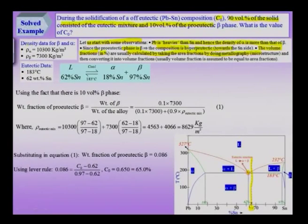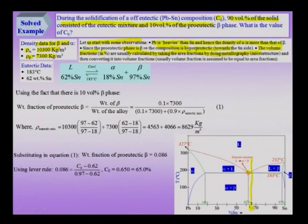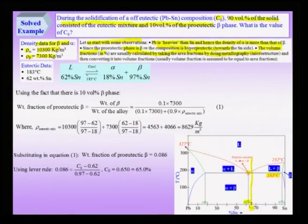The density data given: density of alpha is 10,300 kg/m³, beta is 7,300 kg/m³. The eutectic composition is 62 percent tin, the eutectic reaction takes place at 183°C. The liquid is 62 percent tin, alpha is 18 percent tin, and beta is 97 percent tin — these are the two terminal compositions in the diagram.